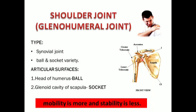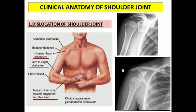The speciality of the shoulder joint is that its mobility is more and stability is less. You can compare this with the hip joint — the homologous joint in the lower limb. In the hip joint, mobility is less and stability is more. In the shoulder, mobility is greater, which is why frequent dislocation can happen, whereas dislocation of the hip joint is comparatively rare.